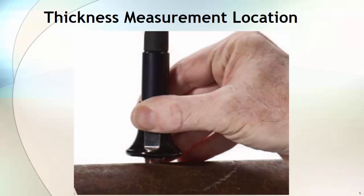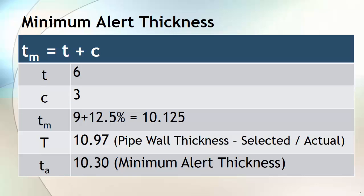Once your plant starts working, you will decide your thickness measurement locations and start monitoring the thickness as per the standard requirements. You know your initial thickness is more than the required thickness, so you will not perform any remaining life calculation until your thickness has reached the minimum alert thickness. Minimum alert thickness is an assumed thickness which is greater than your minimum required thickness and will give you an early warning signal. So during your thickness inspection, once you get this alert, you start doing all your API 570 calculations.